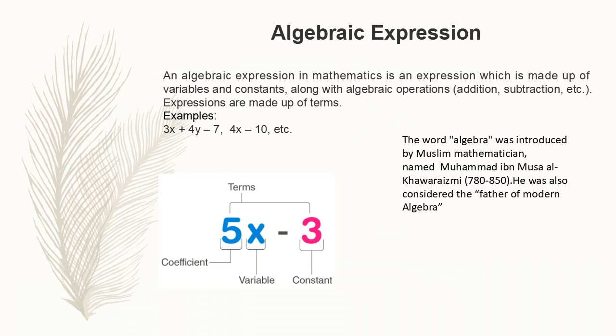Before we start the chapter, we know about the polynomials and before polynomials we know about the algebraic expression. An algebraic expression in mathematics is an expression which is made up of variables and constant along with algebraic operations like addition and subtraction. Expressions are made up of terms.